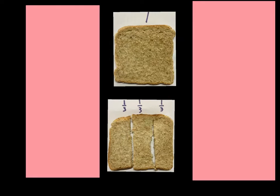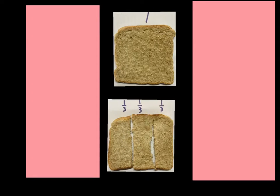The next question is: what is a third, or what is two-thirds? Firstly, you take a slice of bread and cut it into three equal pieces. One piece is a third, another piece is a third, another piece is a third, and two of these pieces makes two-thirds.